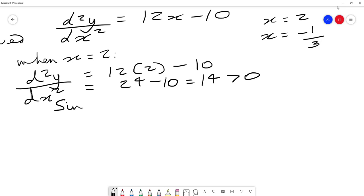Now 14 is a positive value, greater than 0. So since d²y/dx² is positive, therefore it implies it's a minimum point. We can say that (2, -10) is a minimum.